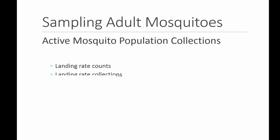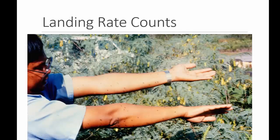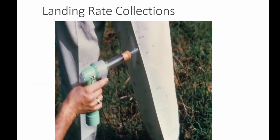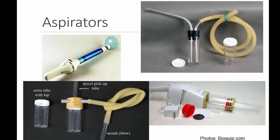Sampling adult mosquitoes can also involve some active collections — landing rate counts and landing rate collections. Landing rate counts is exactly what you think it is: a person stands out in a mosquito area, waits a particular amount of time, and counts the number of mosquitoes that land on them. Landing rate collections work very much in the same way, but instead of just counting the mosquito, you're using some type of aspirator to actually collect them. There are a number of different aspirators useful for mosquito collecting — battery operated, rechargeable battery operated, and some operated by a human being, either sucking or blowing.